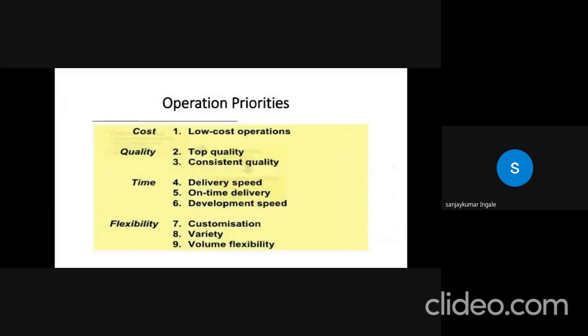Operation priorities. There are four main points in this, which is cost, quality, time and flexibility. In that, we have nine sub points. In cost, low cost operations. In quality, top quality and consistent quality.